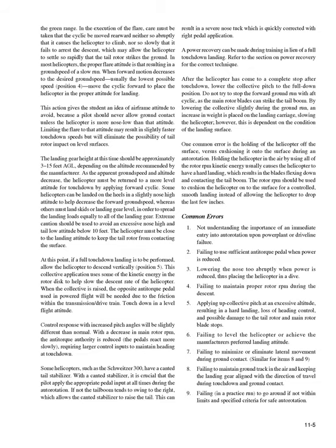A power recovery can be made during training in lieu of a full touchdown landing. After the helicopter has come to a complete stop after touchdown, lower the collective pitch to the full-down position. Do not try to stop the forward ground run with aft cyclic, as the main rotor blades can strike the tail boom. By lowering the collective slightly during the ground run, an increase in weight is placed on the landing carriage, slowing the helicopter. However, this is dependent on the condition of the landing surface.